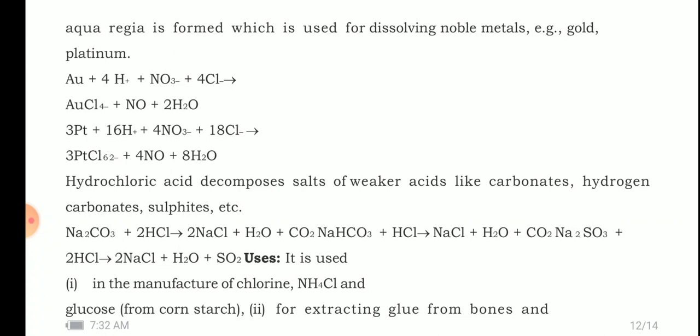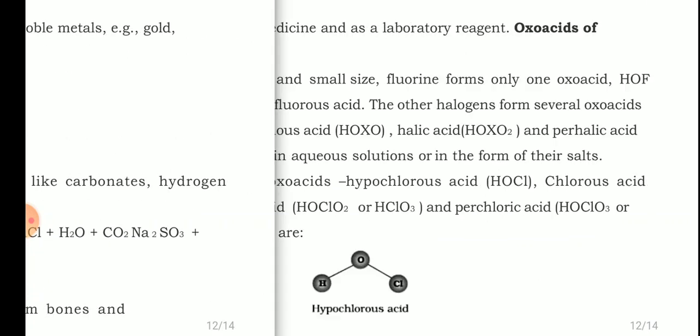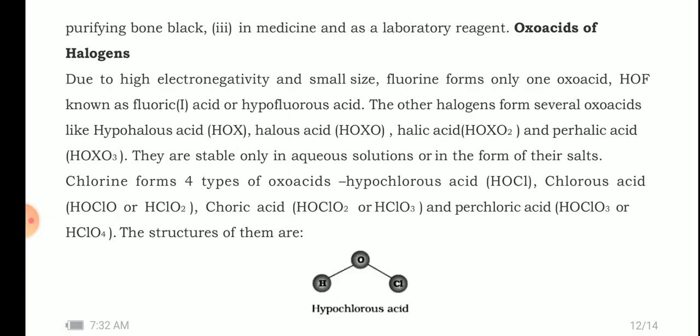The uses of HCl include: manufacture of chlorine, ammonium chloride, and glucose from corn starch; extracting glue from bones and purifying bone black; and use in medicines and as a laboratory reagent. Next, we look at the oxo acids of halogens. Due to high electronegativity and small size, fluorine forms only one oxo acid, HOF, known as hypofluorous acid.